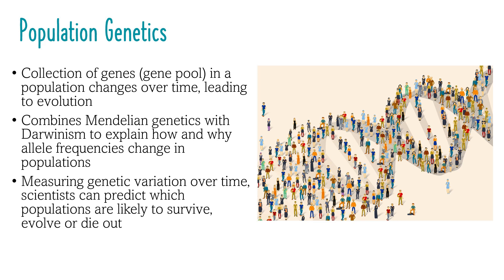The gene pool includes all the genes and different alleles in a population. Genetic diversity is the variety of genetic traits within a species, and species with more genetic diversity have a better chance of adapting and surviving. Population genetics combines ideas from Mendel's genetics and Darwin's evolution to explain how allele frequencies change, leading to micro-evolution and macro-evolution. By measuring genetic variation over time, scientists can predict which populations are likely to adapt, survive, evolve into new species, or die out.